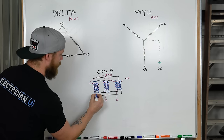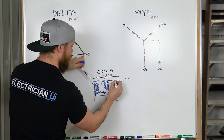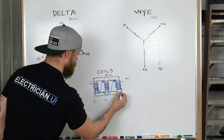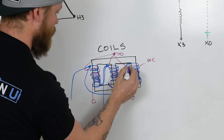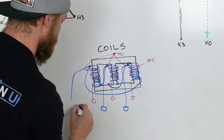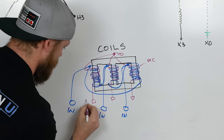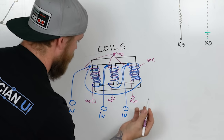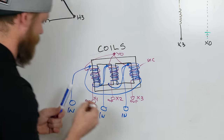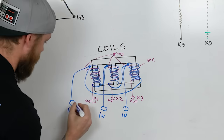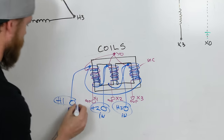H2 connects to H3, and H3 goes back to H1 — forming a triangle. At each one of those junction points there's a terminal that comes out, and those are where you put your high voltage in. So those would be your H1, H2, H3 inputs, while X1, X2, X3, and X0 are your outputs. That's how they're wound: twice as much on the primary, half as much on the secondary — that's how you get a two-to-one turns ratio. There are four-to-one ratios and many others as well.